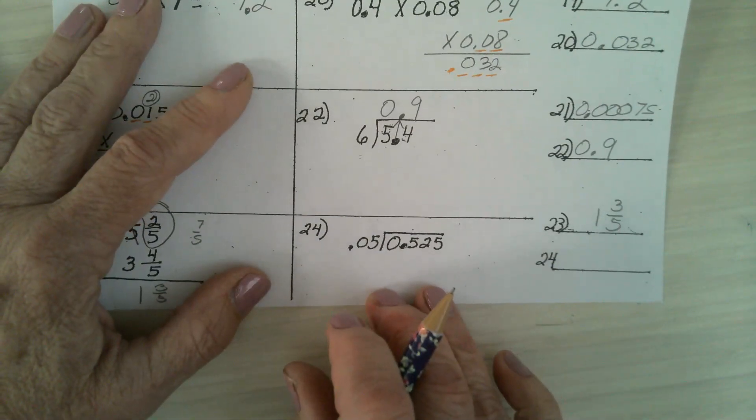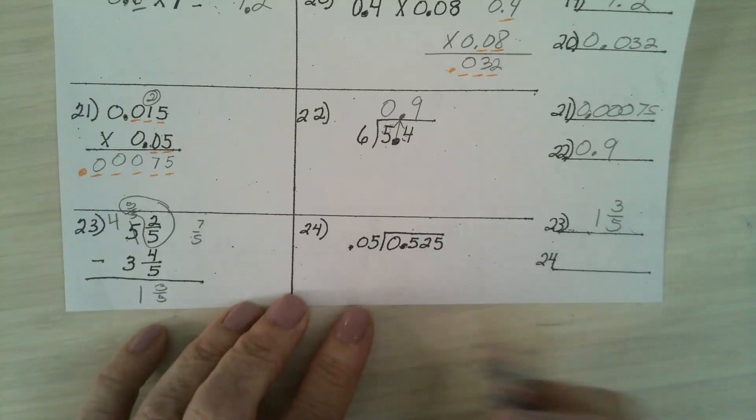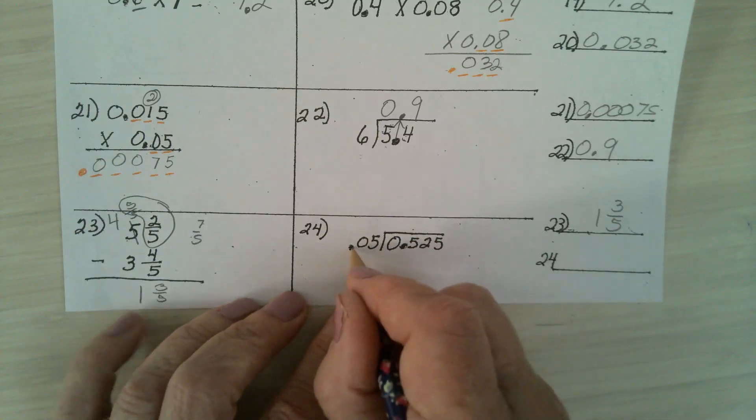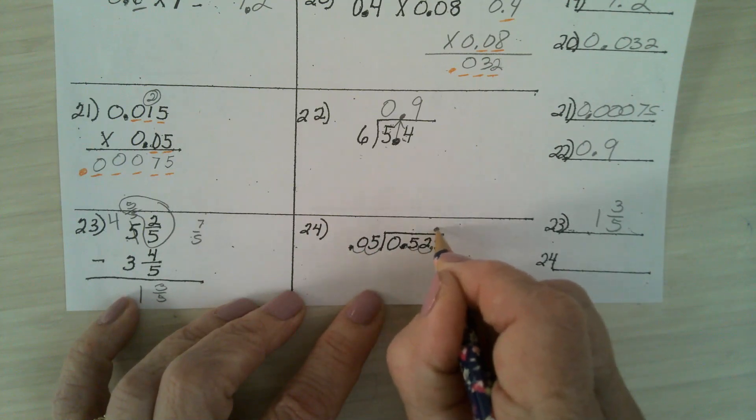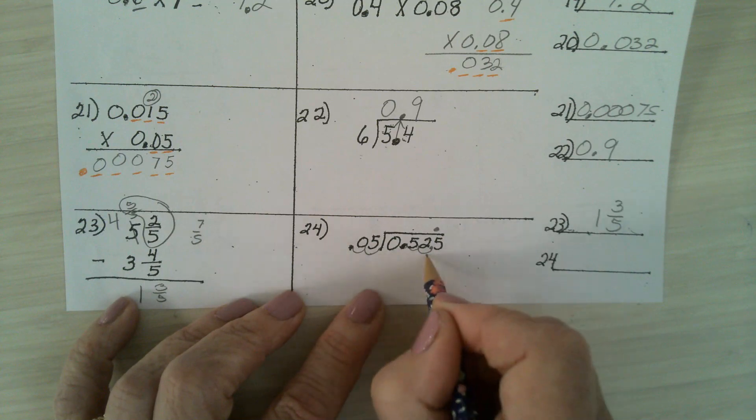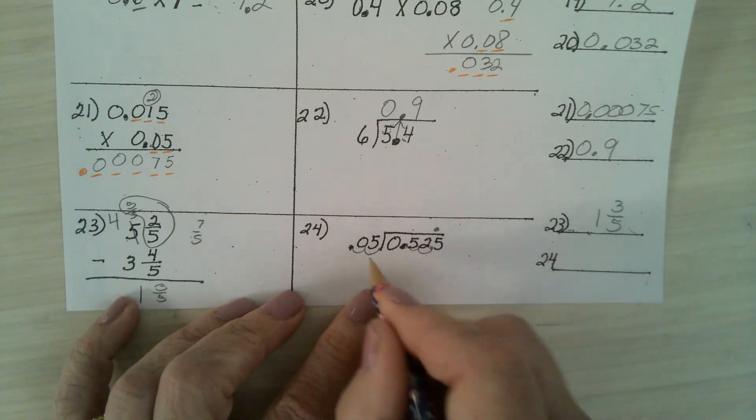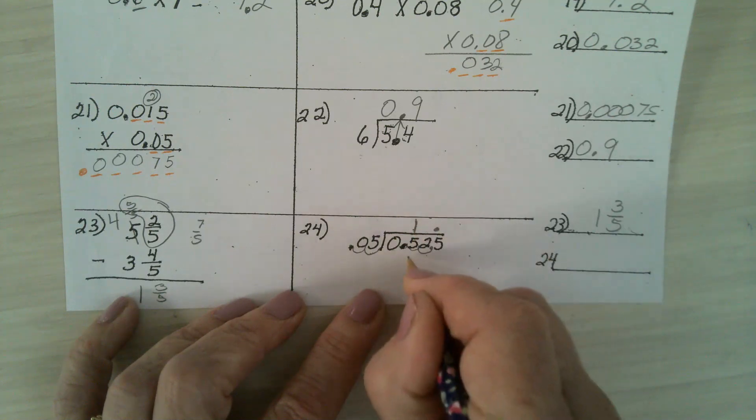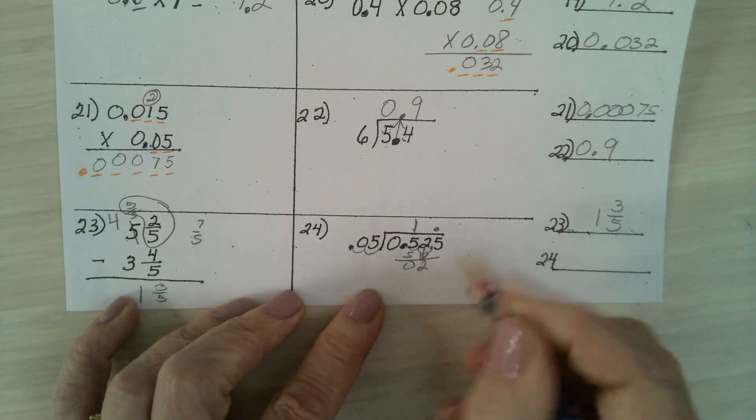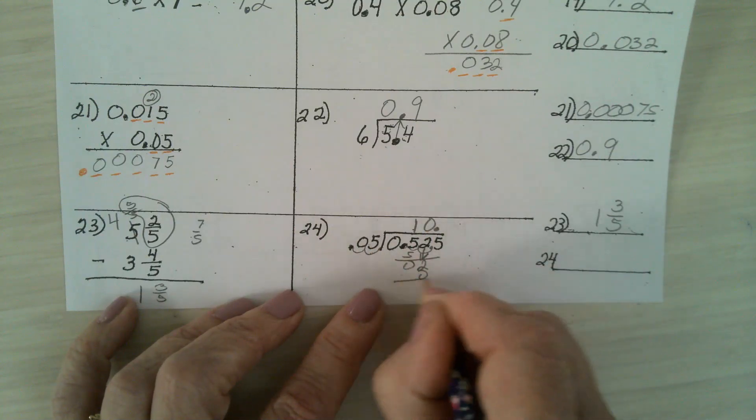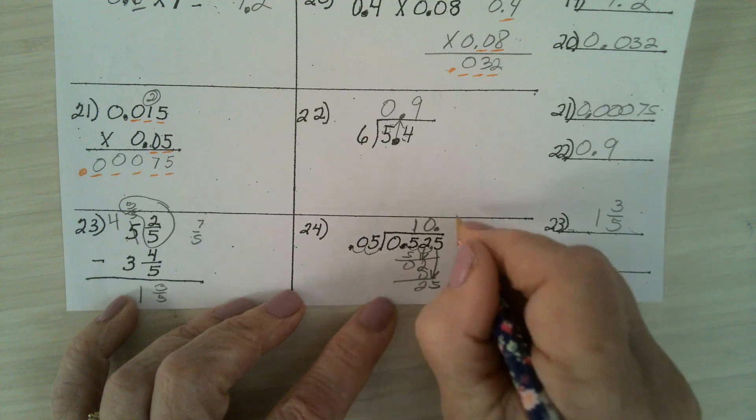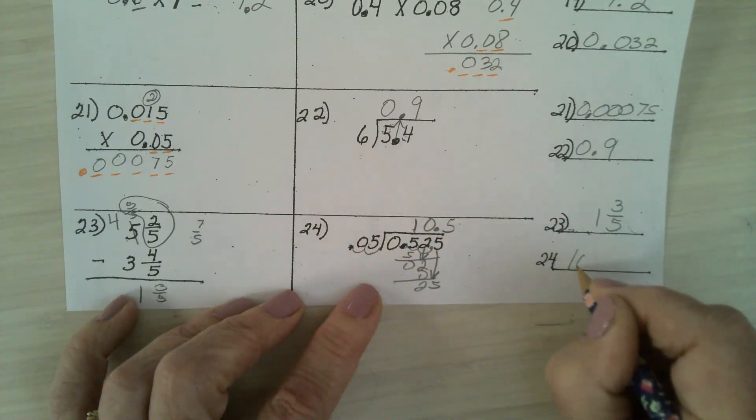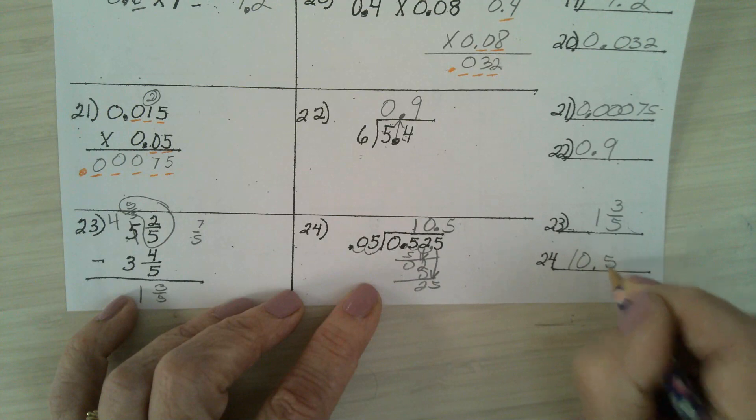In number 24, you are dividing with a decimal. 0.05. We move it out. 1, 2. You move this one the same number. It's like multiplying it by 100. Now, how many fives are in a 5? 1. Subtract. Bring down. How many fives are in a 02? None. Subtract. Bring down. How many fives are in a 25? 5. So, the answer is 10.5.